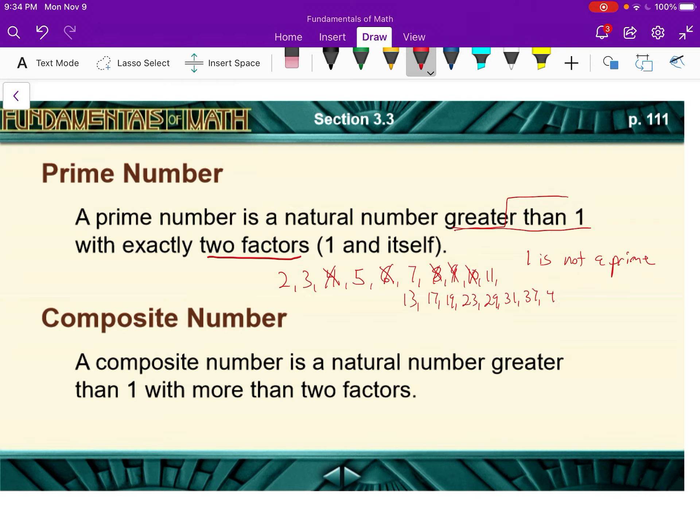37, 41, 43, 47, 53, and we'll stop there. So you could keep going. There's a lot of prime numbers. There's an infinite number of prime numbers.